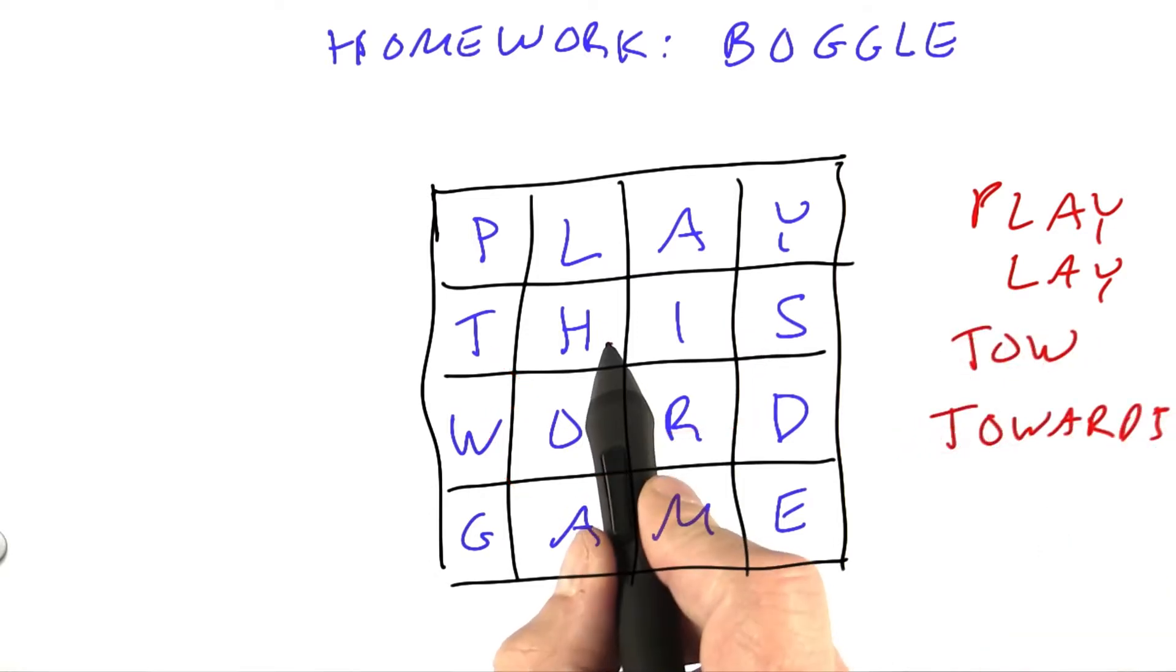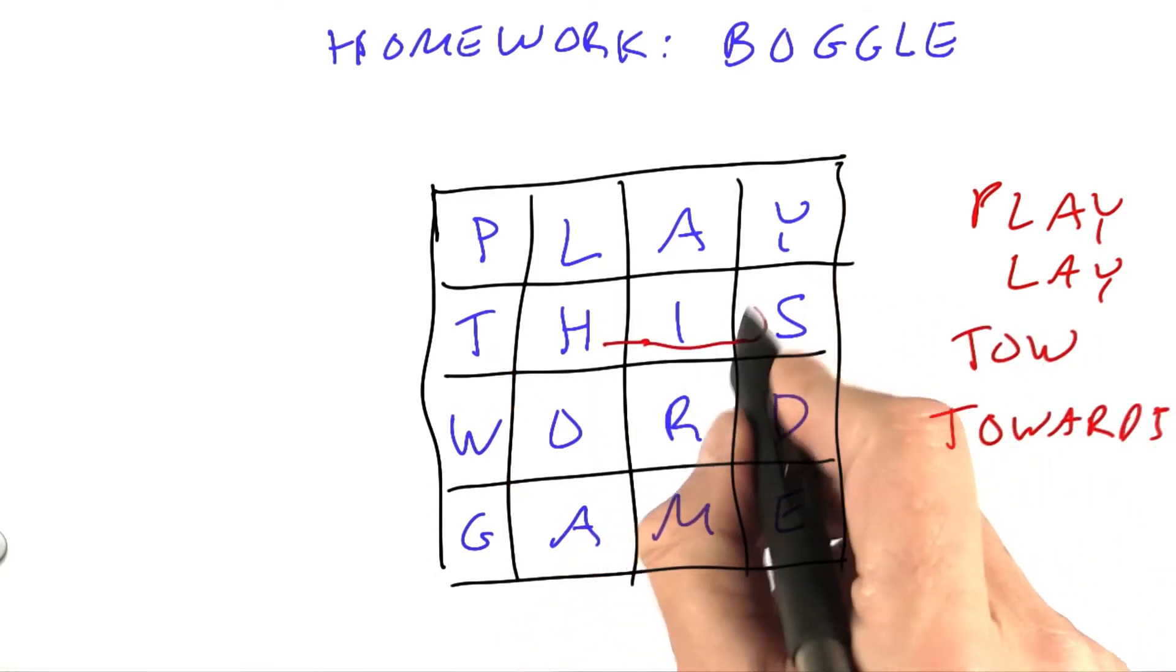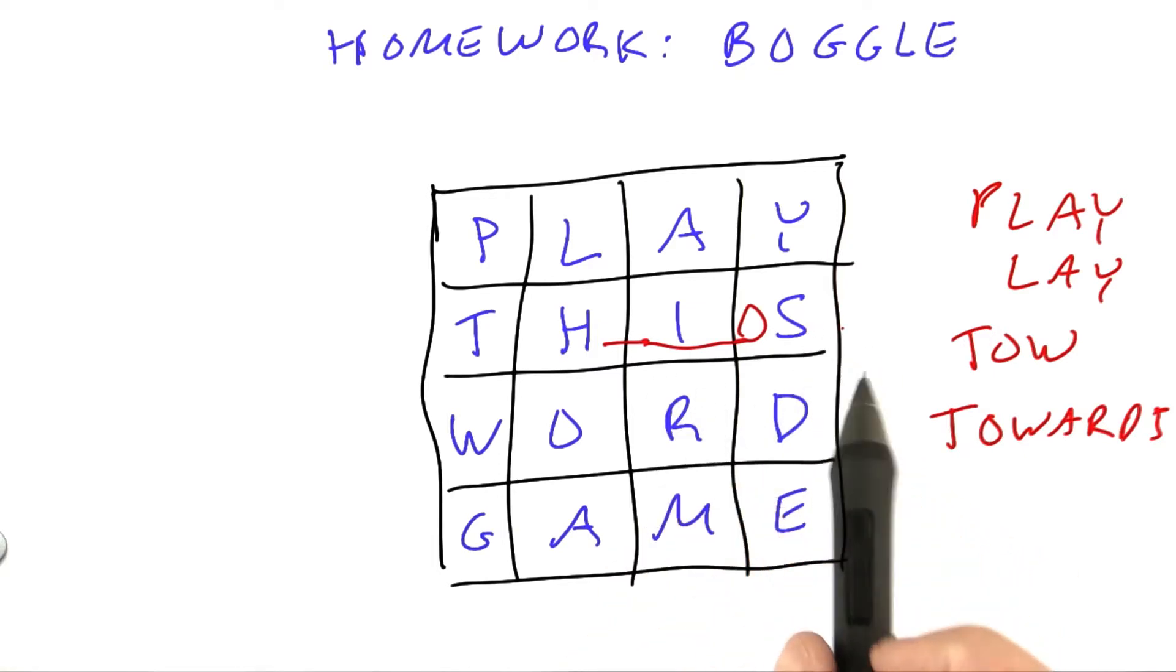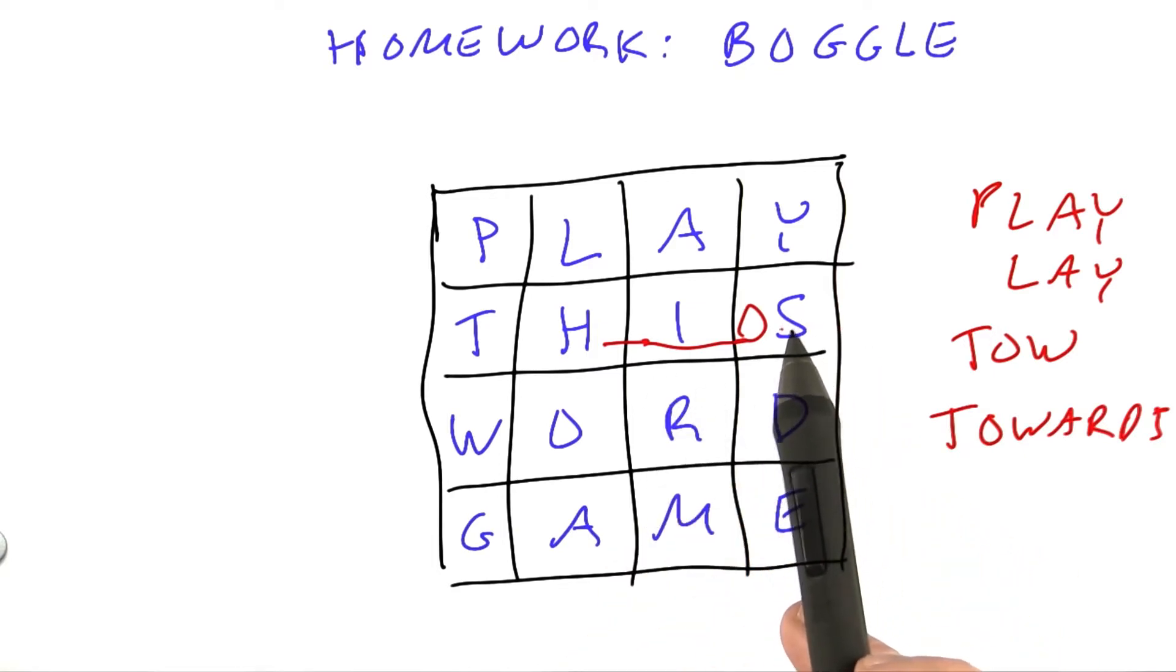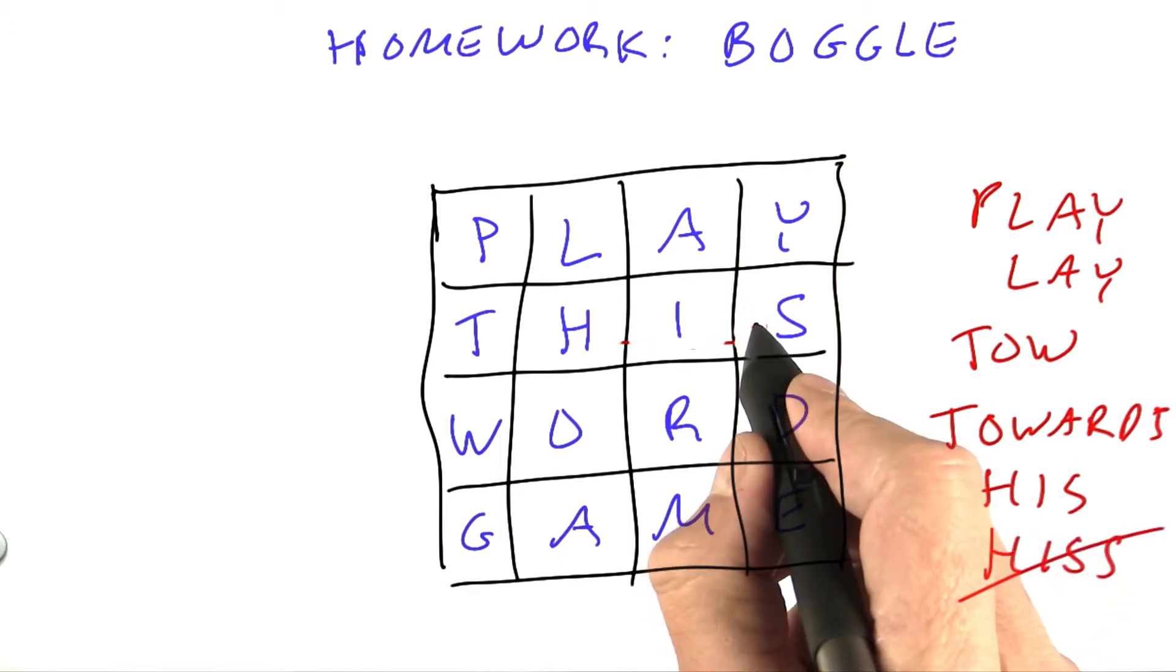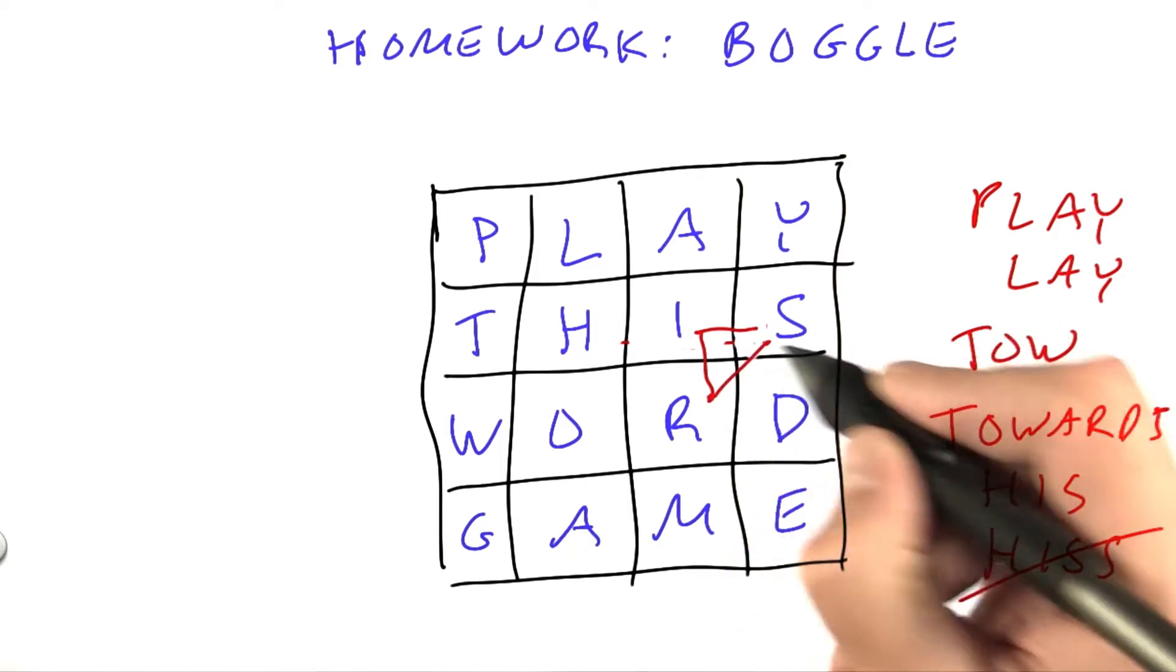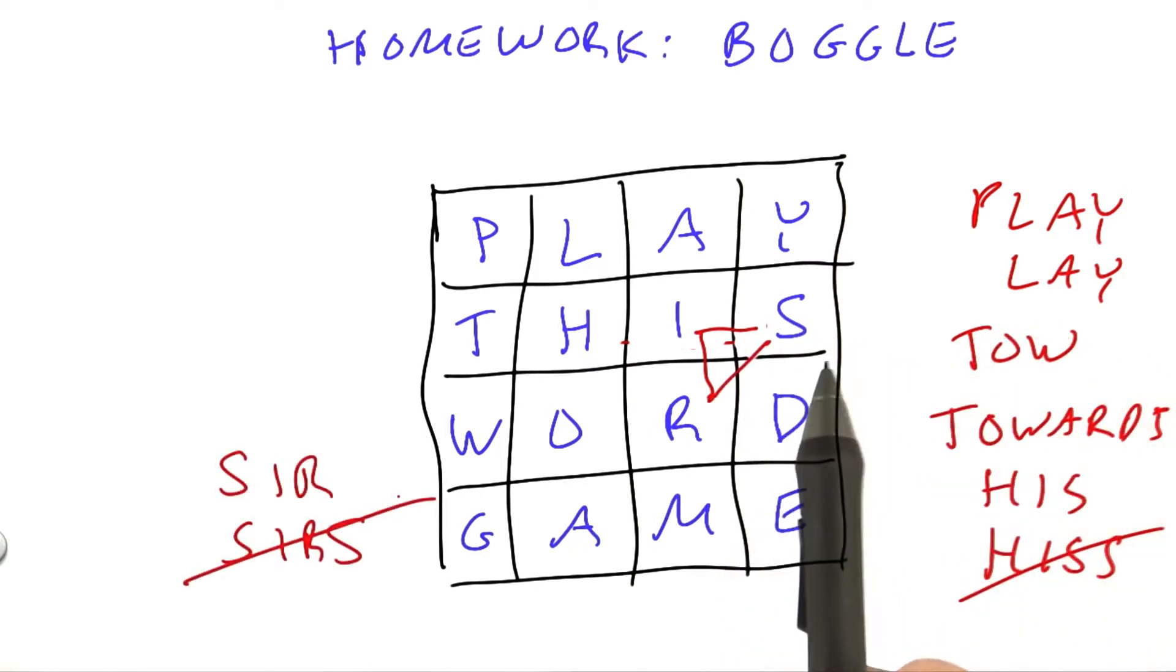We can't duplicate. H-I-S is a word, but we can't do H-I-S-S, because S is not a neighbor of S. His, but not hiss. We could do S-I-R, but not S-I-R-S, because each letter can be used only once. We can't come back and repeat on ourselves.